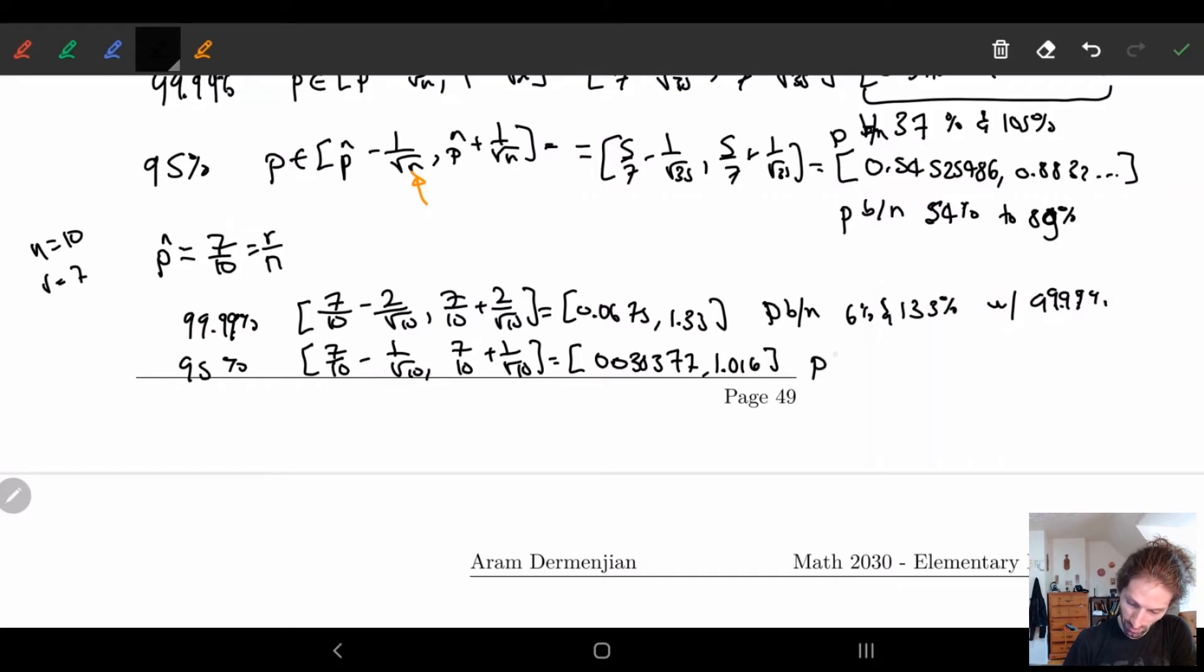This is equal to 0.038377 and 1.016. So in this case, we have p is between, this should not be a 0 here, 0.3.